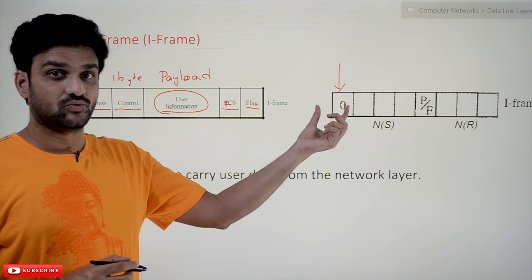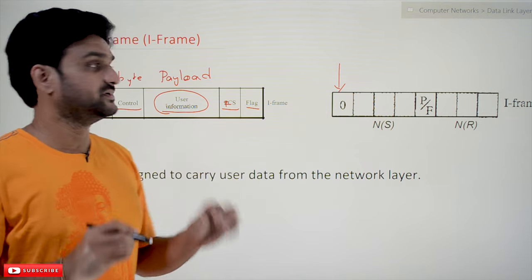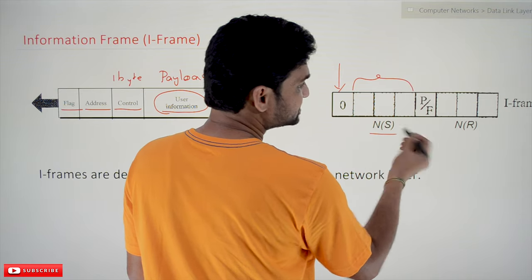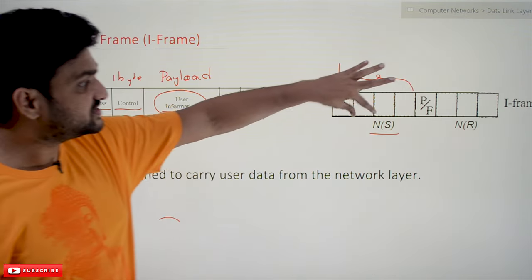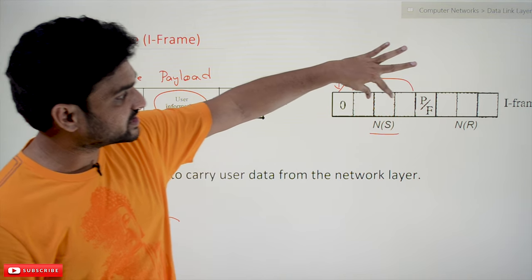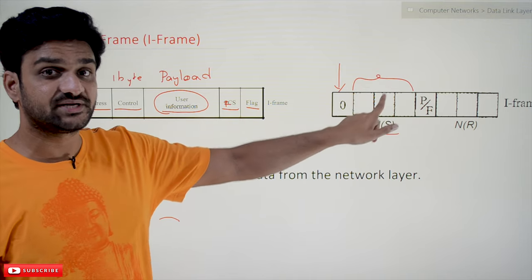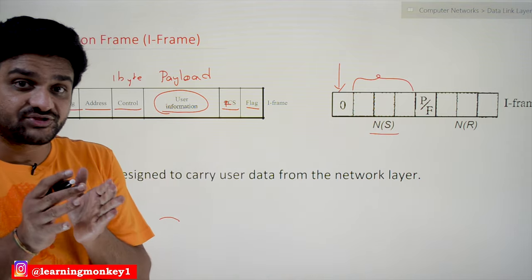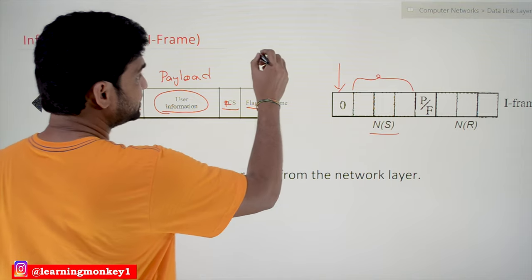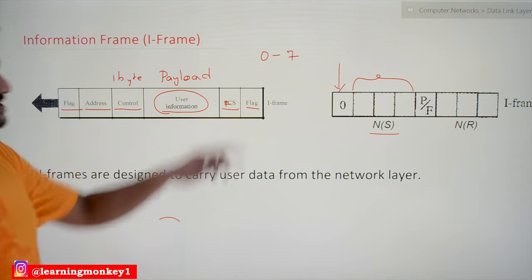If the first bit is zero, it is an information frame. The next three bits represent NS — the send sequence number. The sequence number of the frame is represented in the control field. With three bits, how many sequence numbers are possible? Zero to seven — so eight frame sequence numbers are possible, and the numbering is done from zero to seven.